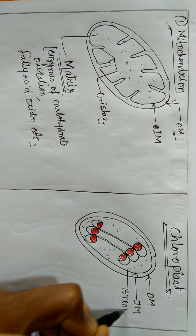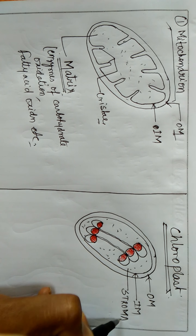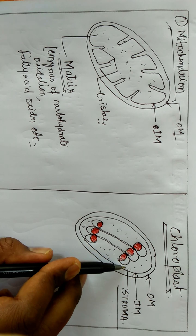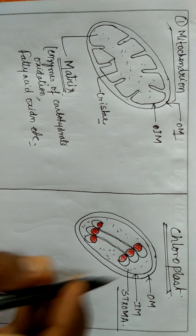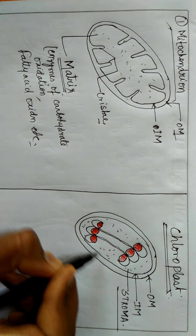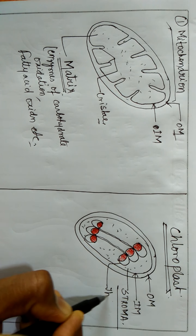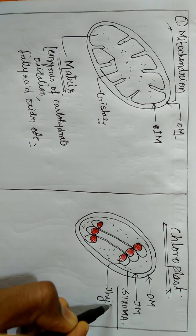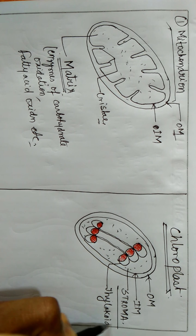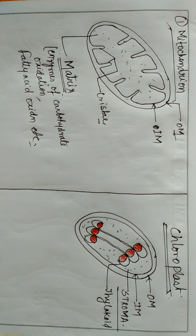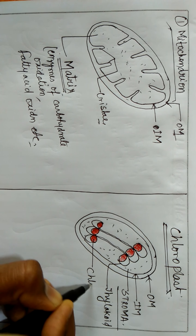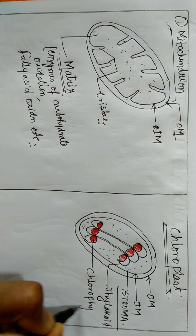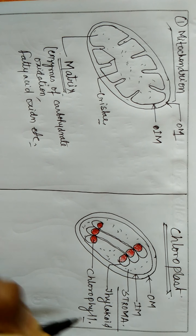See the difference: the fluid inside the chloroplast cavity is called stroma, while in mitochondria we call it matrix. The cup-like structures are called thylakoids — T-H-Y-L-A-K-O-I-D. Inside the thylakoid, chlorophyll is present — I am drawing it in red color, though it should be green.